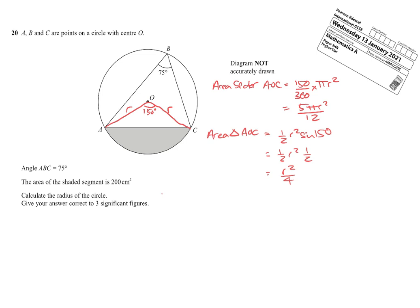So to summarize that, I have my area of my segment. So 200 is equal to 5πR² over 12 minus R² over 4.